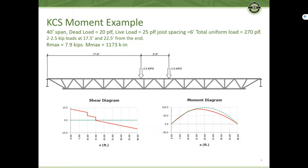Now let's look at the worst case moment. Two 2.5 kip loads applied at 17.6 and 22.6. The end reaction is 7.9 kips and the resulting maximum moment is 1173 kip inches.